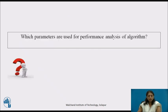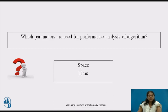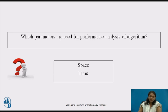Before proceeding with evaluation of an information retrieval system, let us see which parameters are used for performance analysis of an algorithm. Space and time are the measures we use to validate the performance of any retrieval system. Less space and time means a better algorithm. But for information retrieval systems, apart from space and time, other measures are also used.